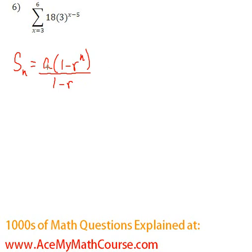Great, a is the first term, and the first term in this case will be 18 times 3 to the power of 3 minus 5. Because we just plug in the 3 for x.